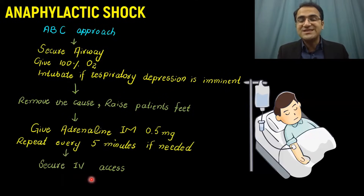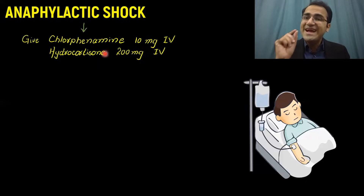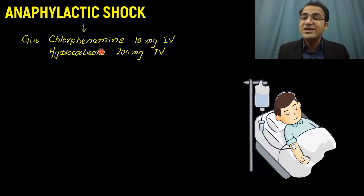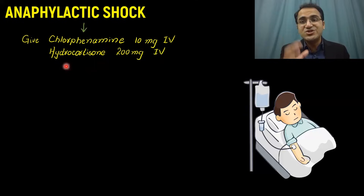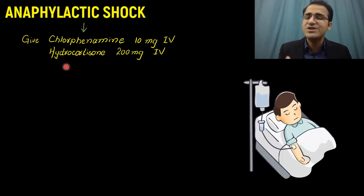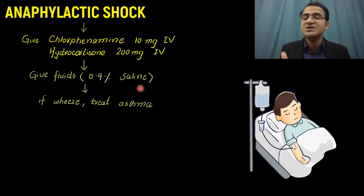Secure IV access and give chlorpheniramine 10 mg IV. Chlorpheniramine is an antihistamine — it antagonizes the action of histamine and reduces the allergic reaction, urticaria, and vasodilation. Also give hydrocortisone 200 mg IV. Hydrocortisone is a steroid and suppresses the immune response in this hypersensitivity reaction. Give fluids — 0.9% saline — to support the blood pressure, since this patient is in shock and will have hypotension.